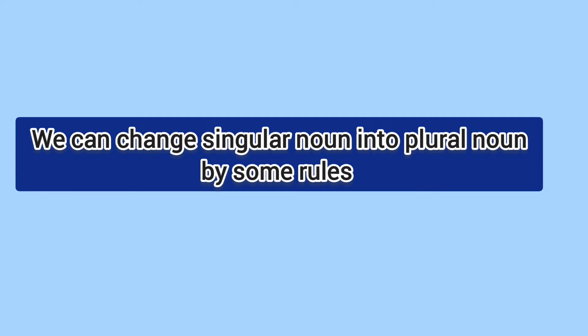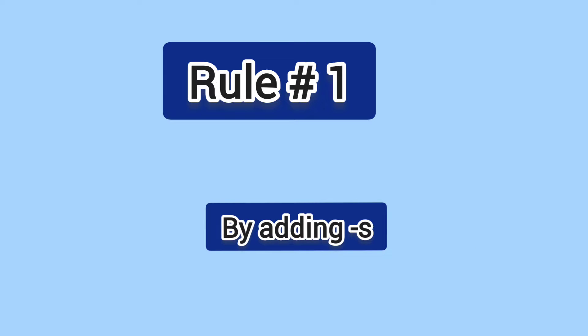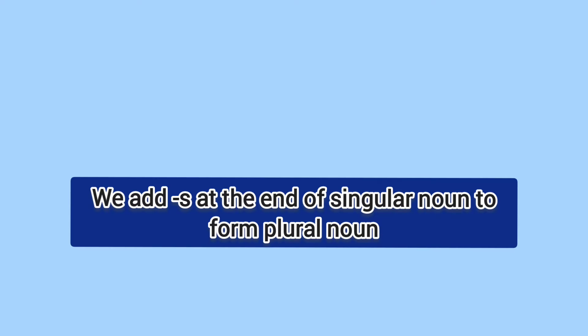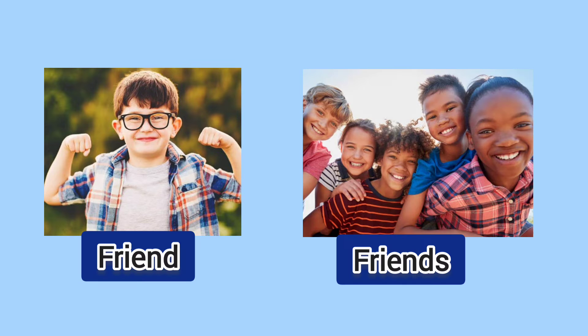We can change singular nouns into plural nouns by some rules. Rule number one: by adding s. We add s at the end of singular nouns to form plural nouns. For example: dog, dogs; book, books; friend, friends.